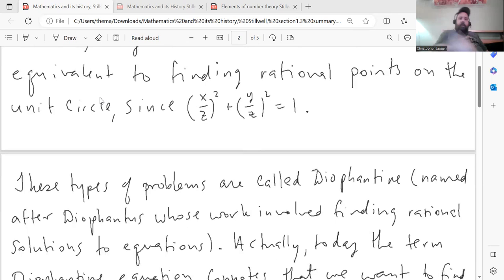And we can obviously, x over z and y over z is a pair, a rational solution, a rational pair of coordinates that will lie on the unit circle, because that's the equation of the unit circle.